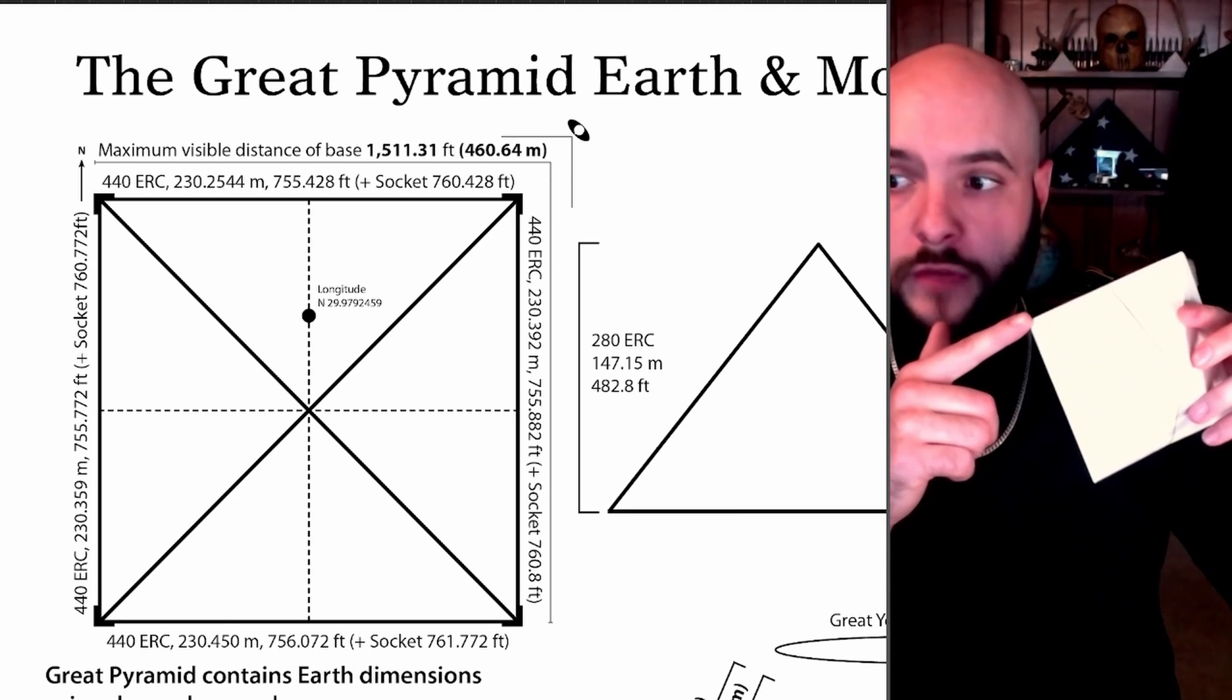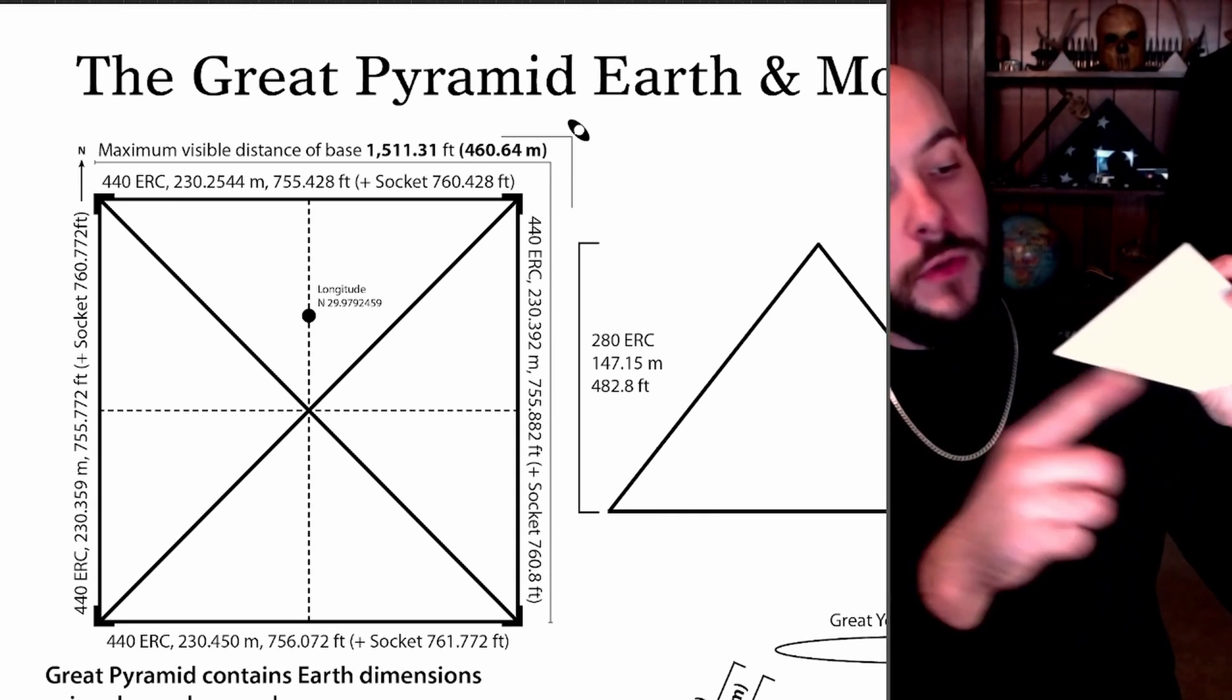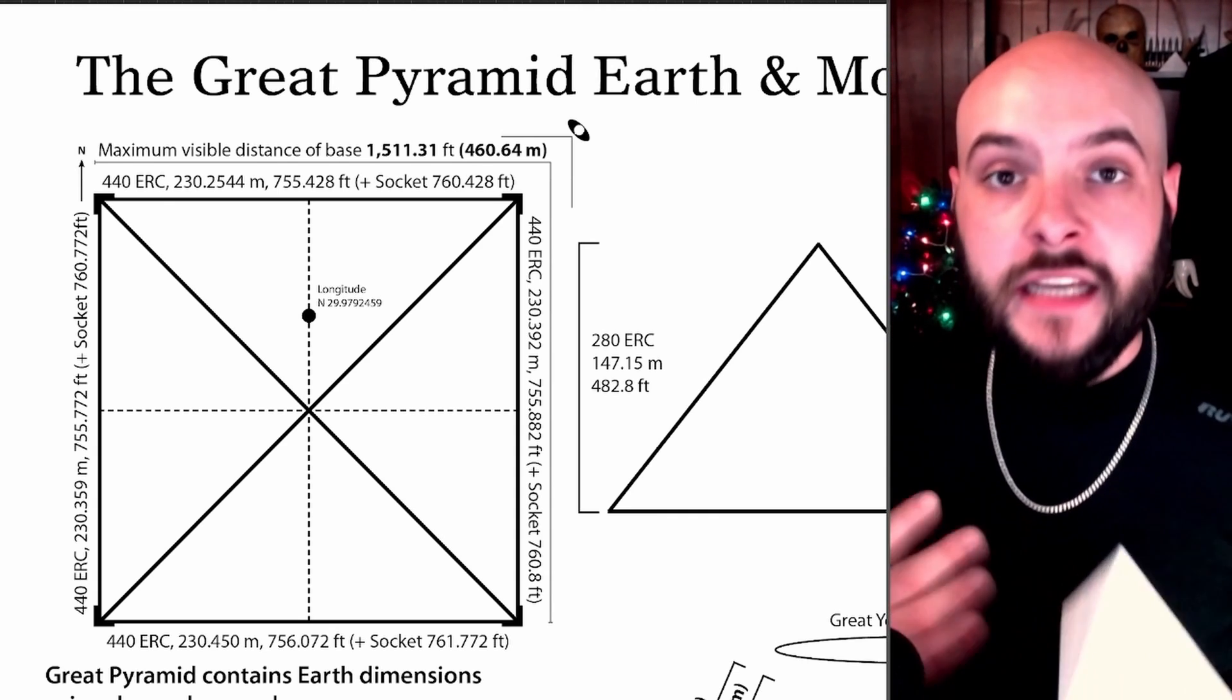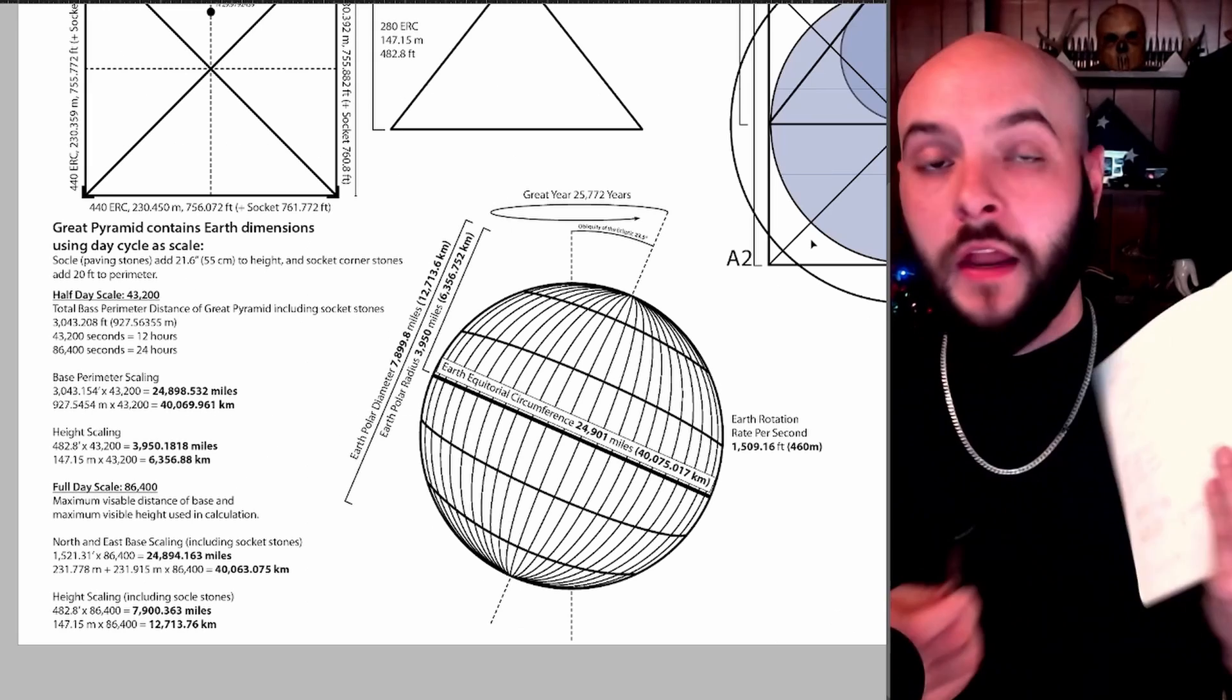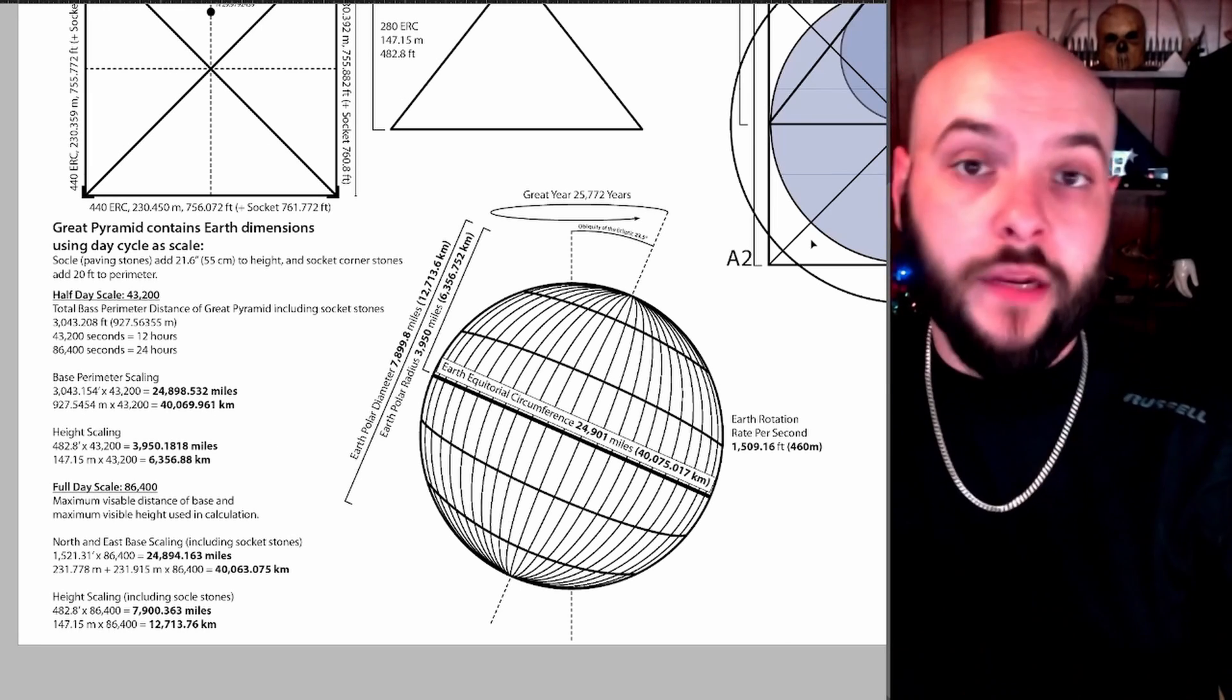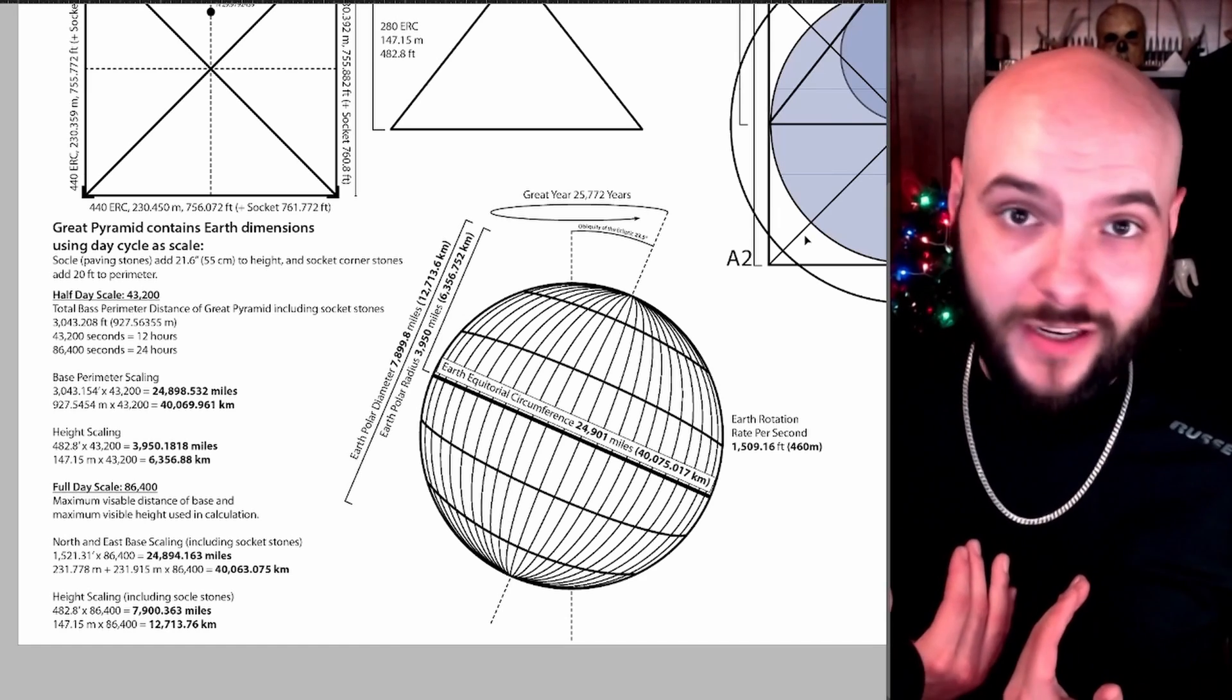So if we were standing at the corner of the Great Pyramid staring at the structure, the total height we would see along with its base scaled up by 86,400 times gives us the dimensions of the planet. Now by all means, go check my math. I've been doing this several times now and it works and I can only encourage you to do it for yourself because I don't want you to trust me at all.